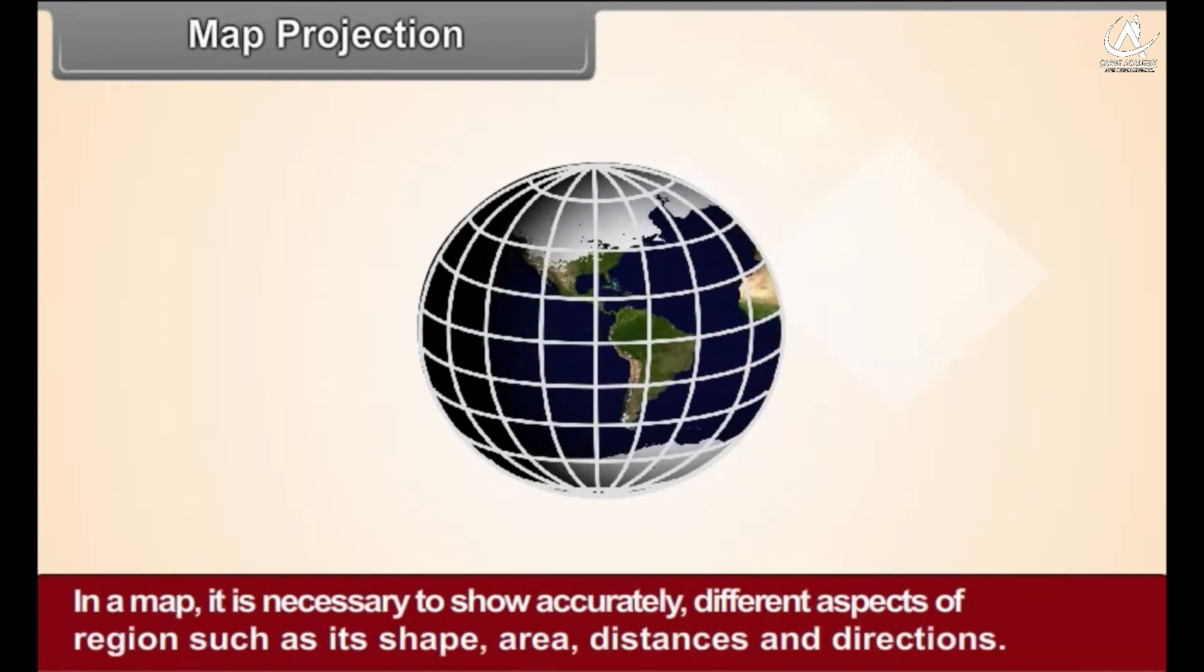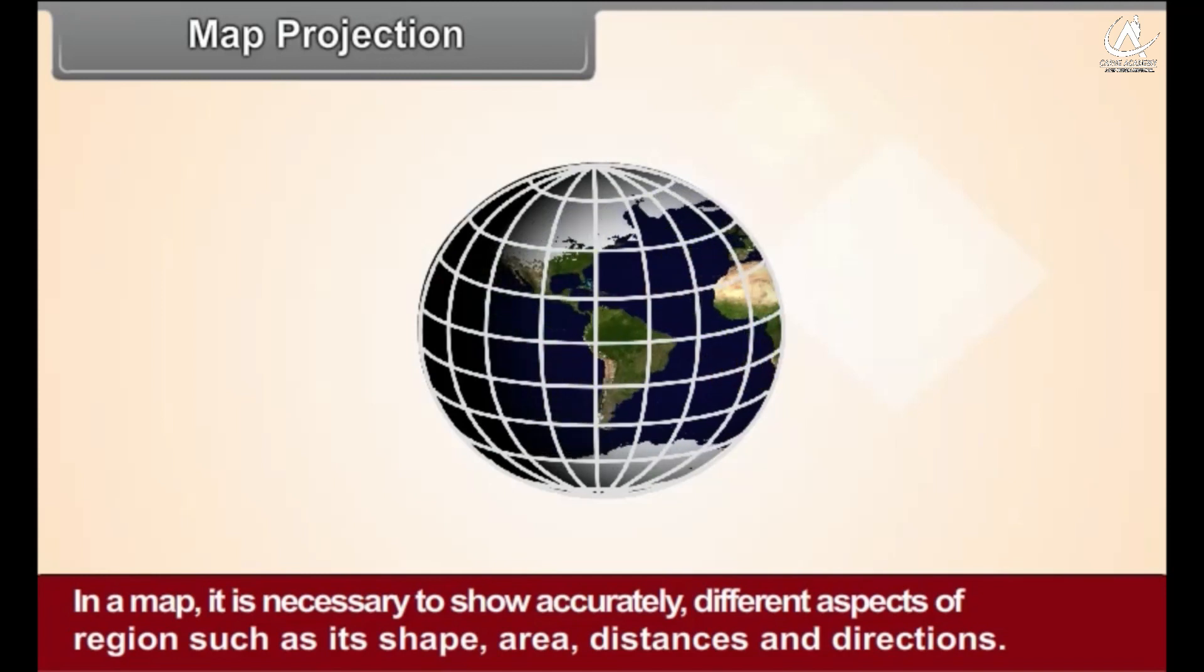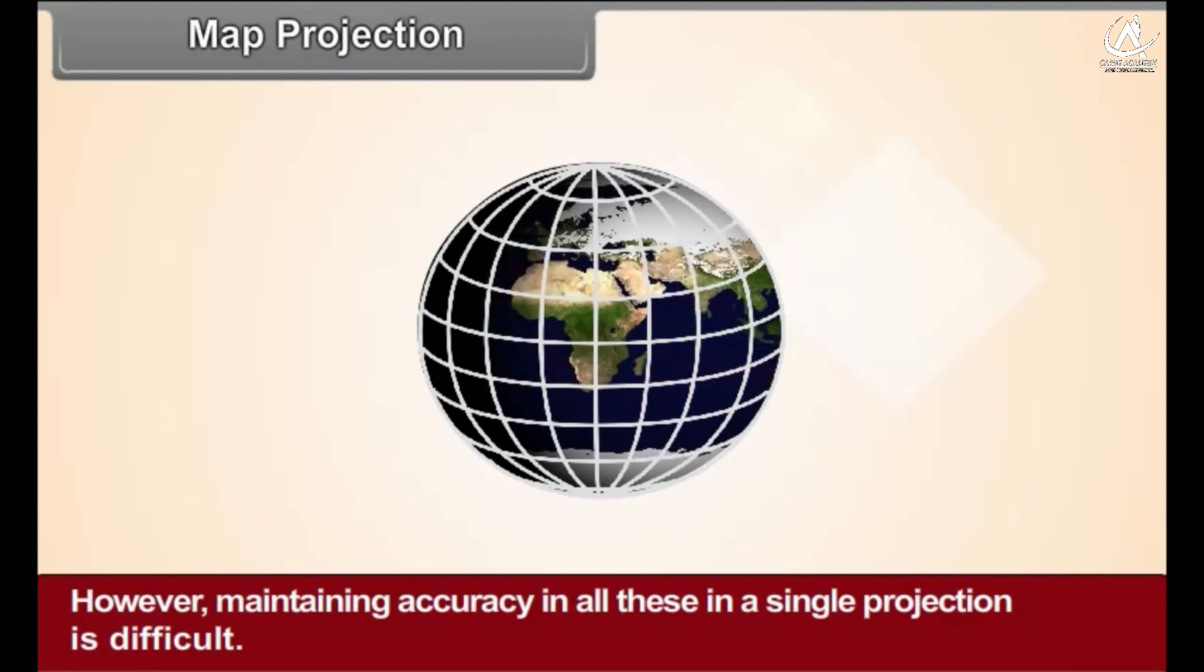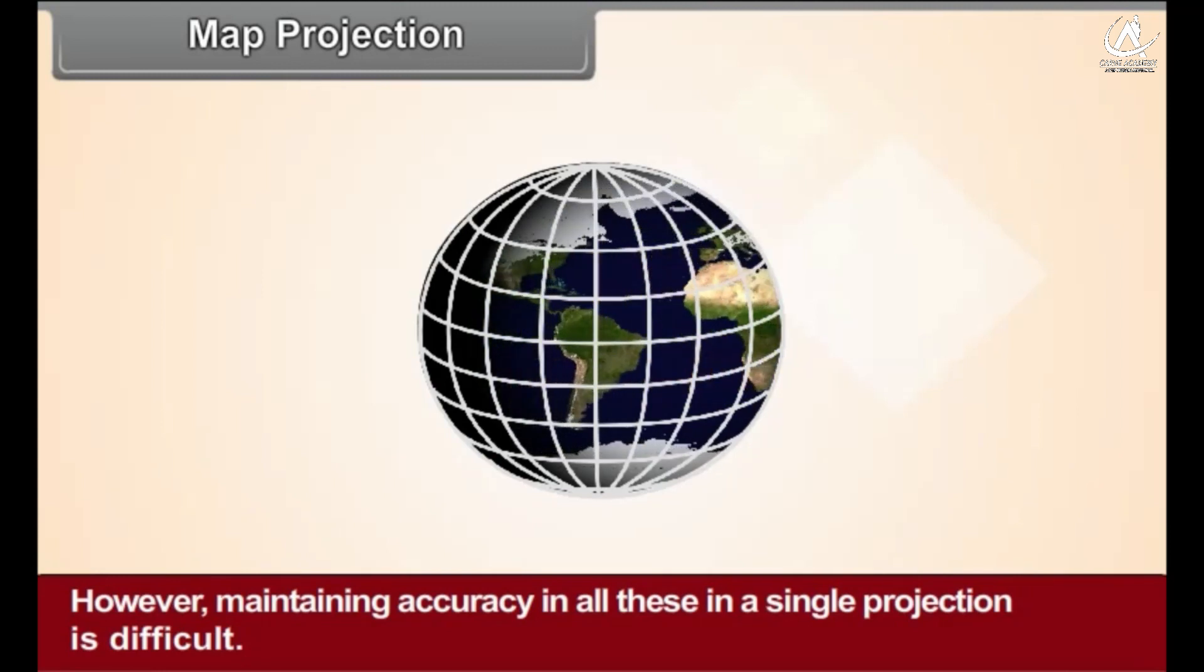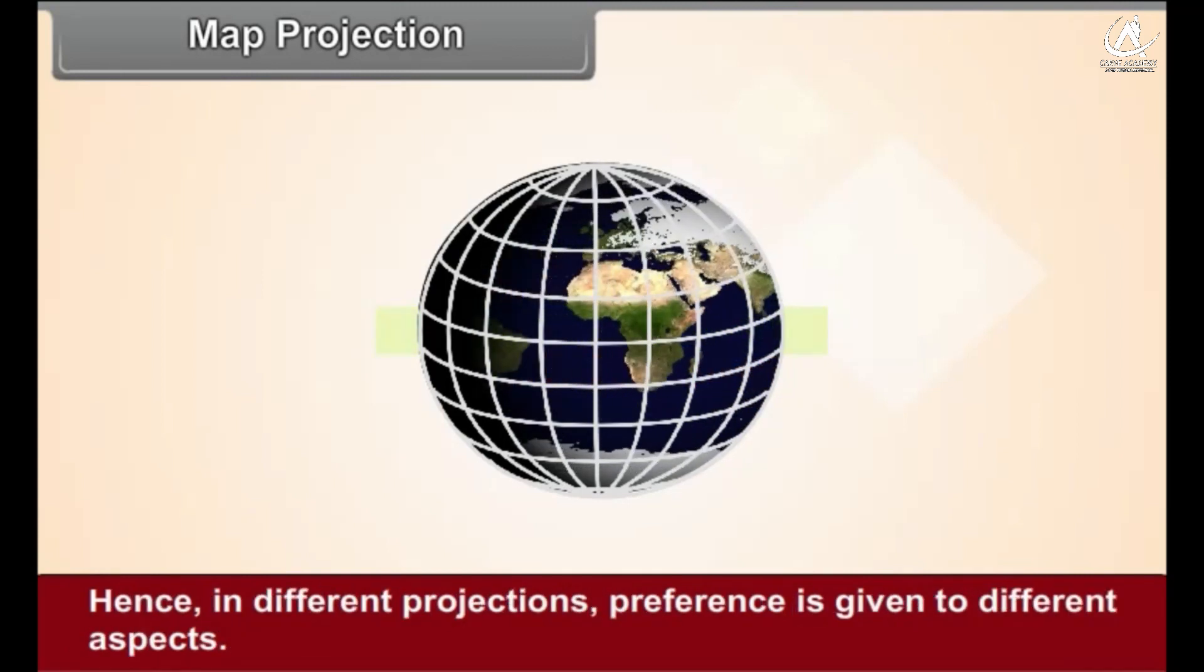In a map it is necessary to show accurately different aspects of a region such as its shape, area, distances, and directions. However, maintaining accuracy in all these in a single projection is difficult. Hence in different projections, preference is given to different aspects.